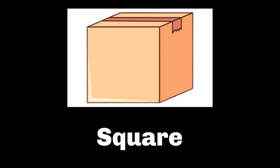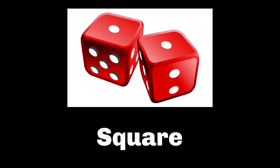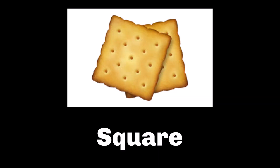Sometimes our packages come in a box — this box is a square. When we watch TV, our long TVs are in the shape of rectangles. If you play games you've played with dice, the surface of each dice is a square. Baking cookies is sure fun and the pans that we put the cookies on is in the shape of a rectangle. Finally, what shape are these crackers? Are they square or rectangle? Well, each side is the same size — that lets us know that they're a square.